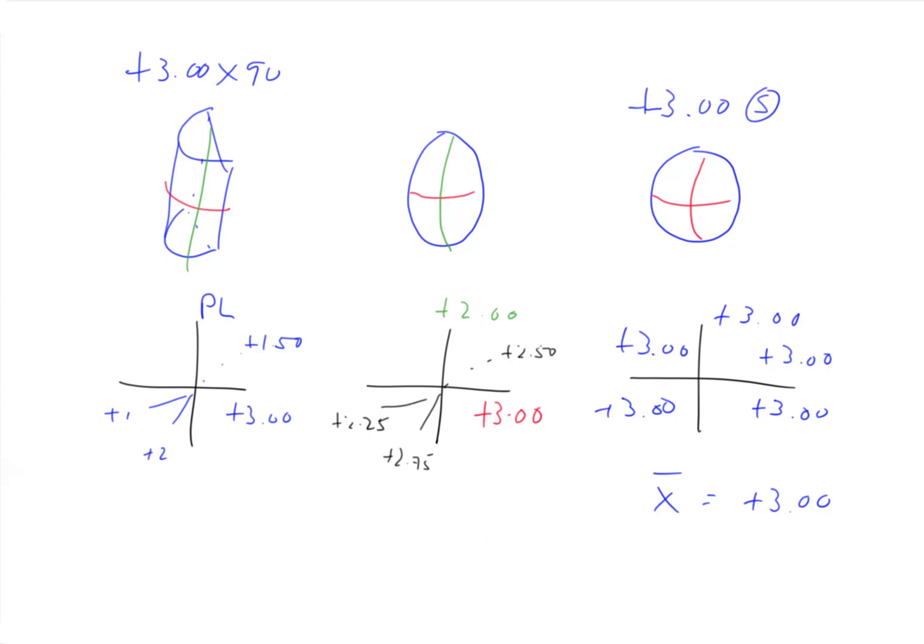So the very, very lowest power we're going to have anywhere on the lens is plus two. The very, very highest power we're going to have anywhere on the lens is plus three. And in between, we're going to have something between two and three.